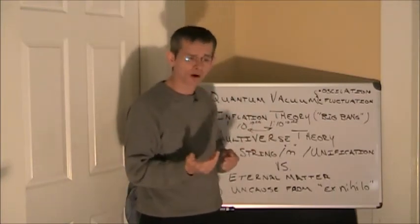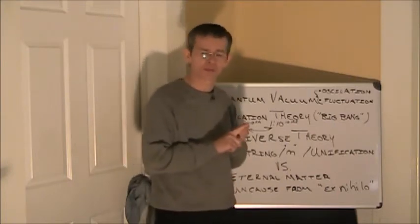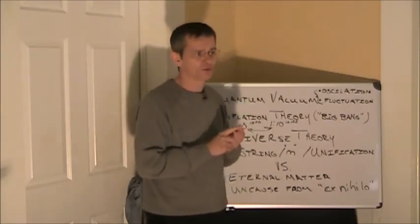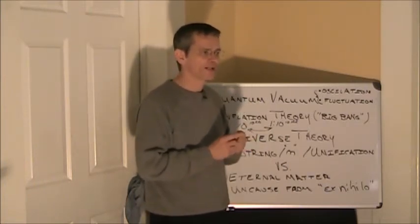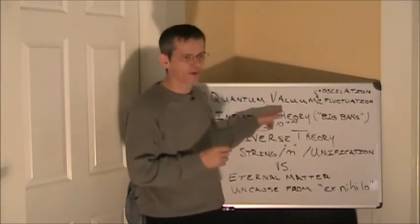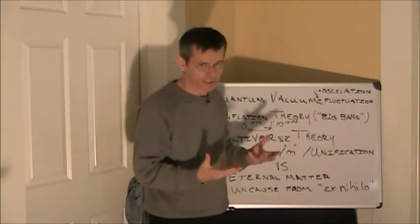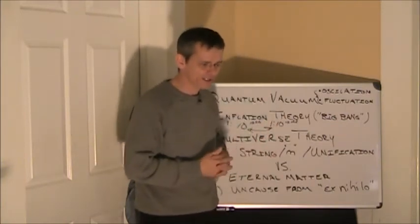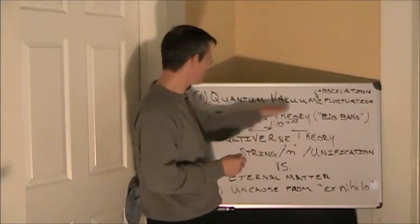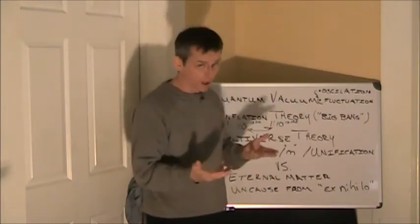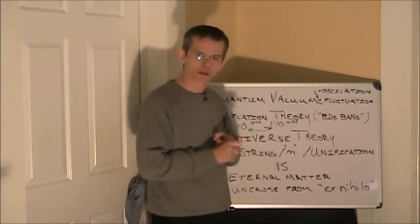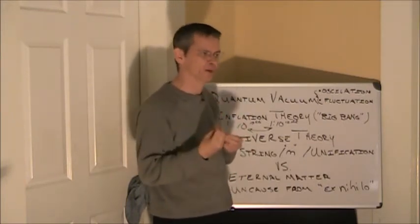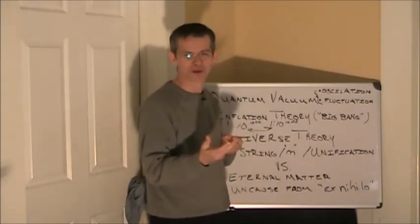The problem with argument one, eternal uncaused, is it doesn't fit what we seem to observe in the universe. I'll use these terms. It doesn't fit the evidence. Also, it's an argument for a quantum theory of gravity, which doesn't exist yet. That equations haven't been worked out, so this is purely speculation. Regardless of it being speculation, you're still back to point one for an eternal uncaused that has problems when you bring in the laws of thermodynamics.